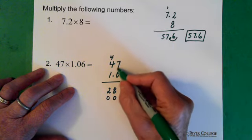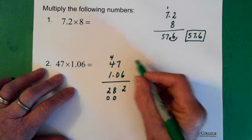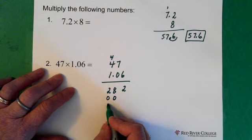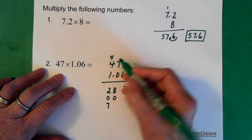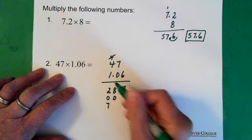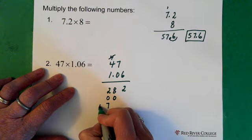Now we take the 1 multiplied by the 7 and that gives us 7. We move 1 step to the left and the 7 goes here. 1 times the 4, and again this was with the previous part. So 1 times the 4 gives us 4 and the 4 goes here.